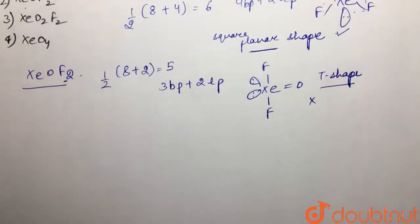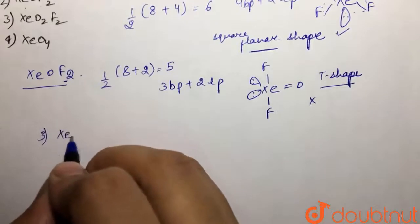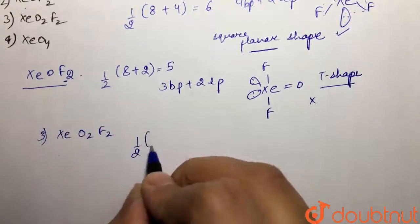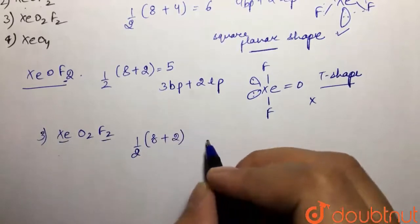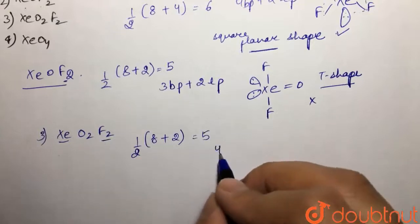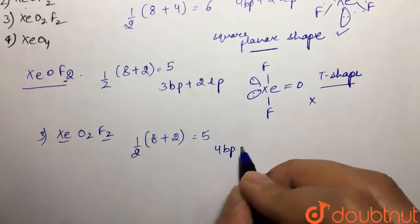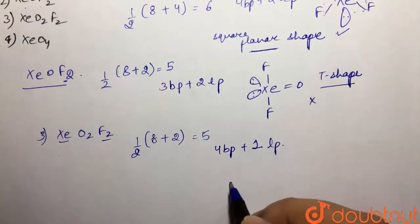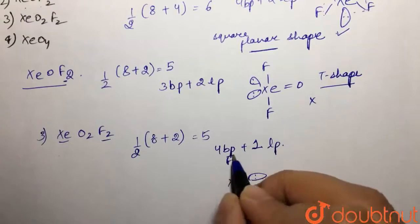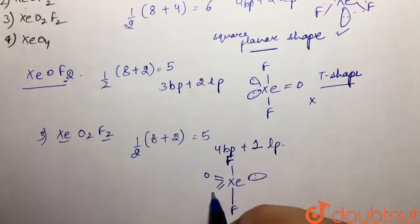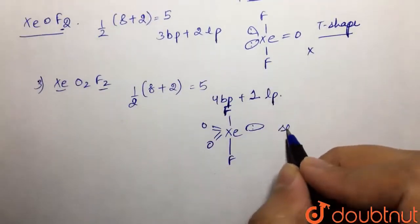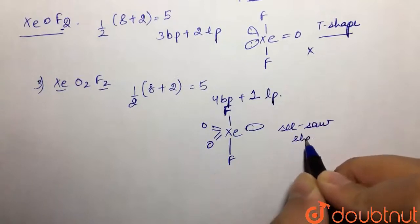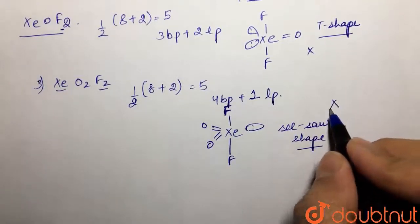Then we have XeO2F2. Again, half of the valence electrons of xenon — eight — plus two monovalent atoms attached gives (8+2)/2 = 5. It is making four bonds, so it has four bond pairs and one lone pair. Its structure has one lone pair, two fluorines, and double-bond oxygens — this is a see-saw shape. Again, it is not planar.